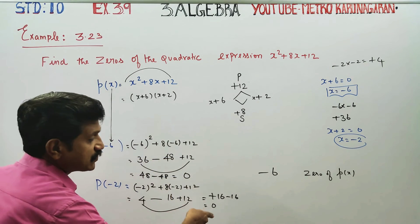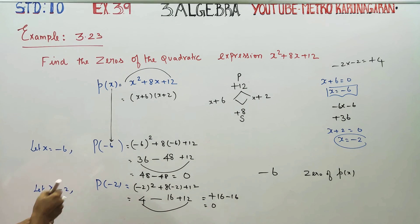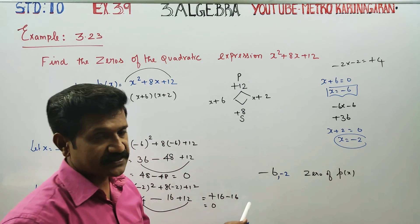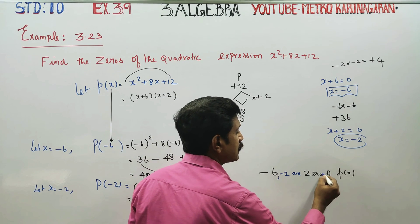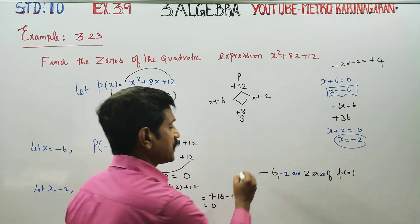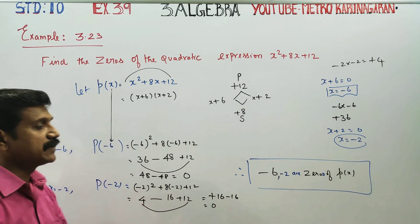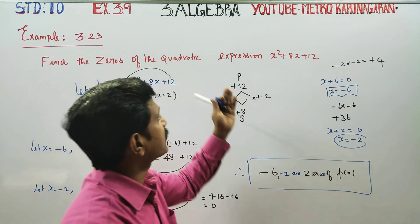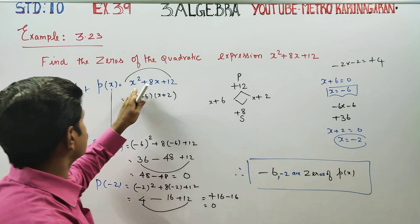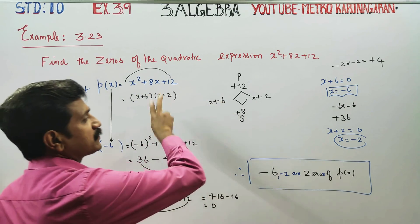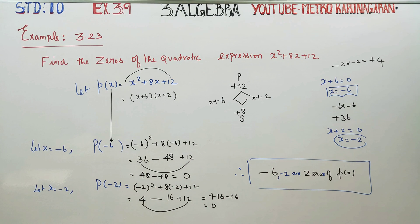Minus 2 answer is 0. This is 0. Quadratic question P of x: the answer is zeros of the polynomial P of x are minus 6 and minus 2. The zeros of the polynomial P of x are minus 6 and minus 2. You can use the product-sum method with opposite symbols to find the zeros of the polynomial. Thank you.